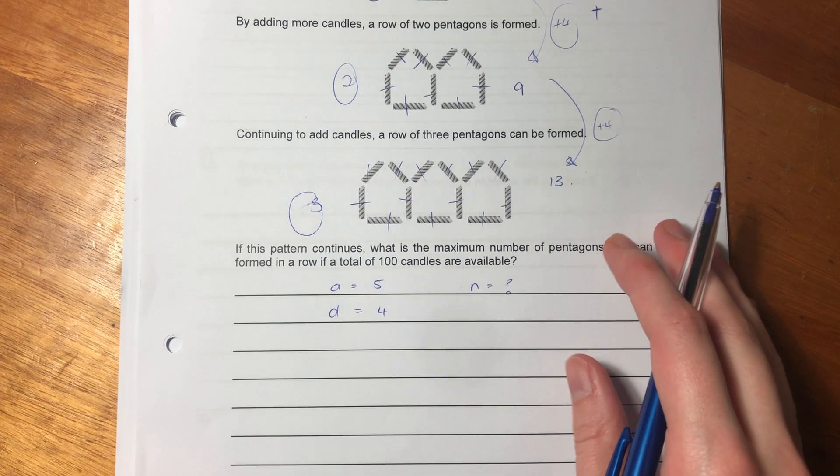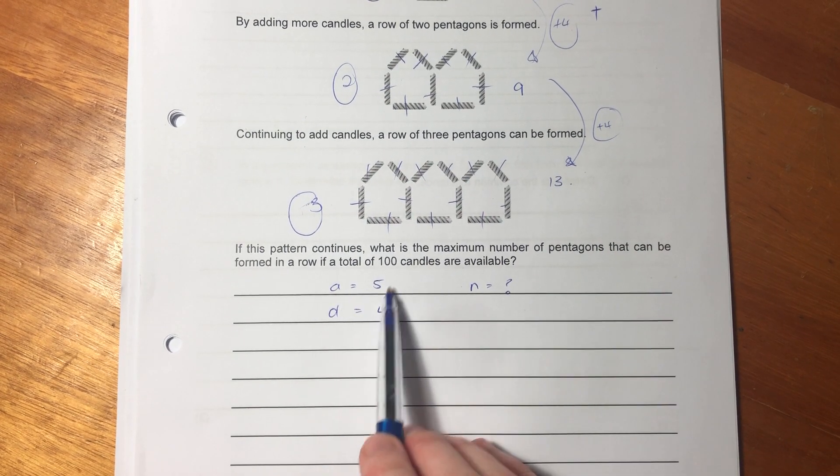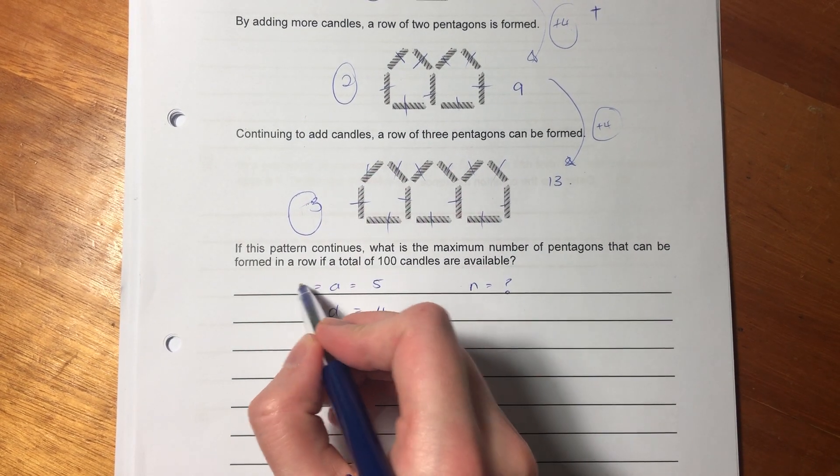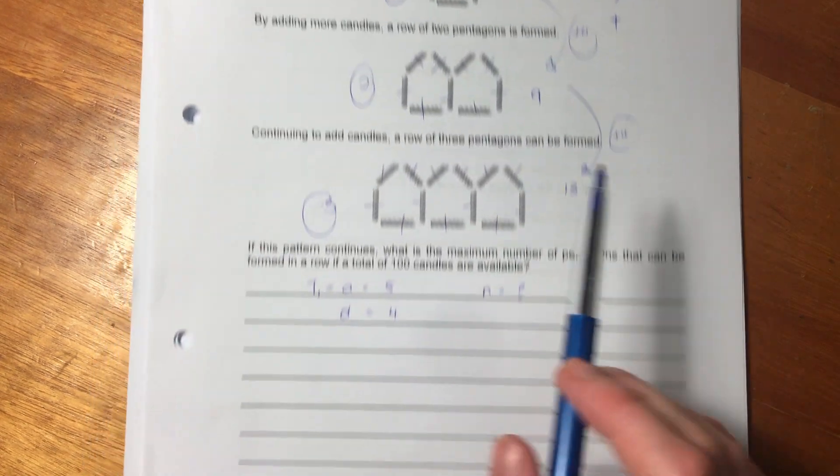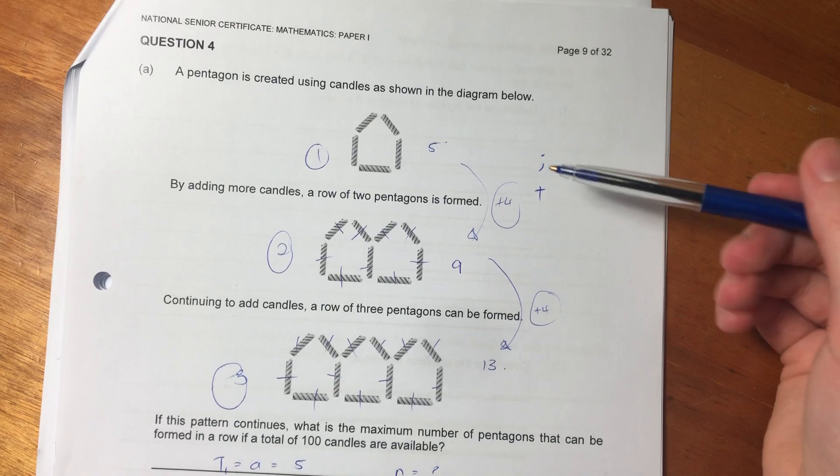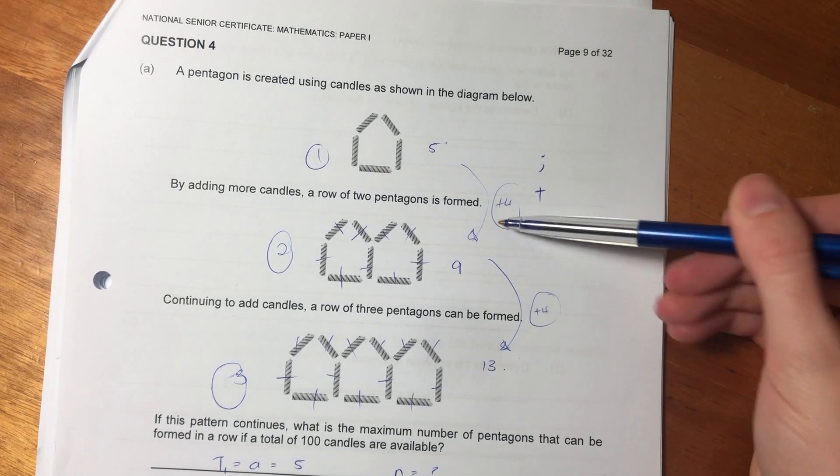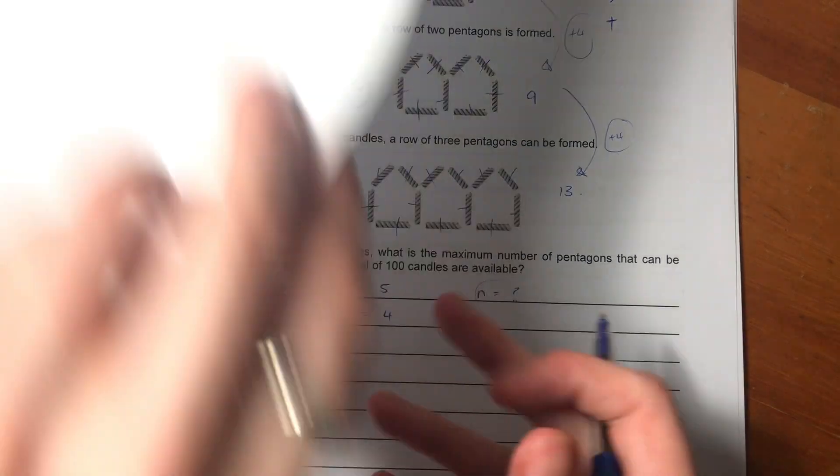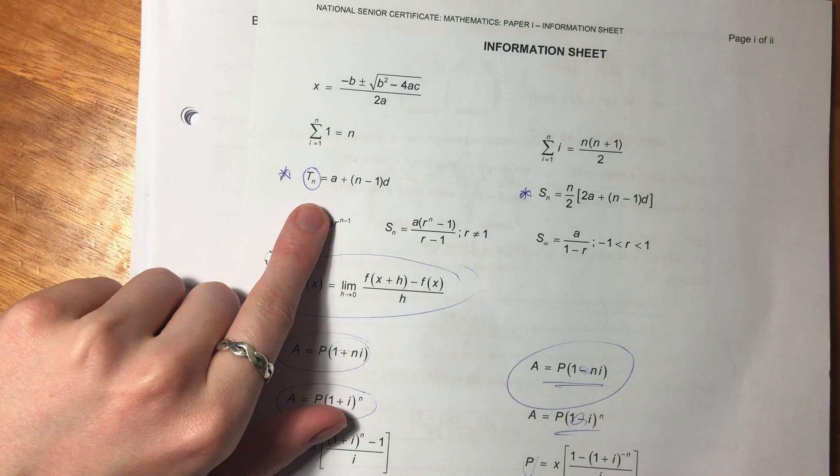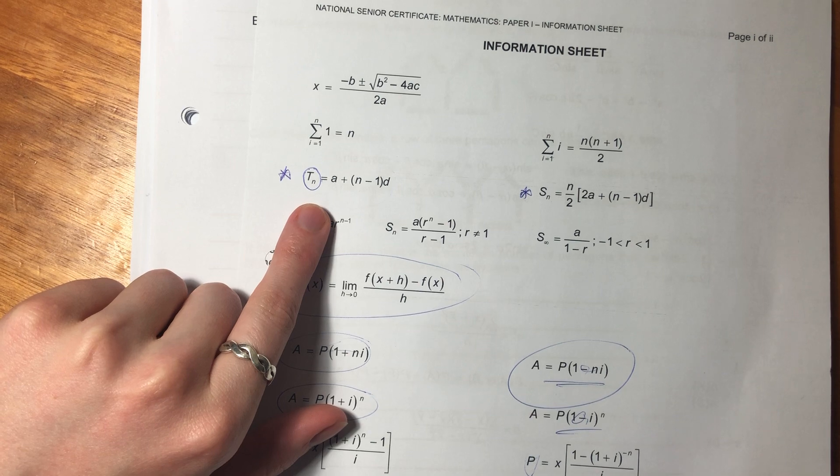So let me just make sure you can see what I'm doing. So we know that A is our first term. So A is the same as T1, which is five candles. We know that D is our constant difference, which is plus four in this instance. And N is what we're trying to work out. So let's use this formula because we're not trying to find the sum, we're trying to find the term.